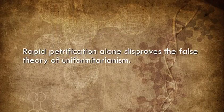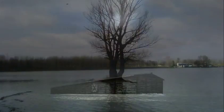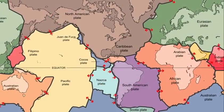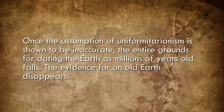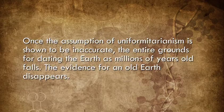The bottom line is that rapid petrification alone disproves the false theory of uniformitarianism, and many other examples could be given. Natural catastrophes seriously affect all dating assumptions — catastrophes like local floods and the global flood of Noah's day, volcanic eruptions, plate tectonics and their effects, especially tectonics possibly caused by God Himself on day three of the creation week. Who knows what God might have done pre- and post-flood that could have affected the earth's decaying processes? Once the assumption of uniformitarianism is shown to be inaccurate, the entire grounds for dating the earth as millions of years old falls along with it. The evidence for an old earth simply disappears.